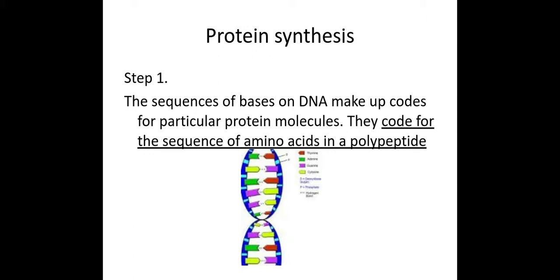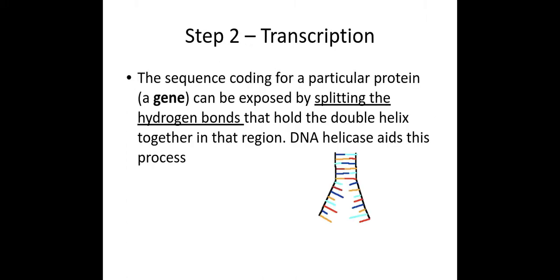So in order to access this gene to make a copy of it, the first thing that happens is the hydrogen bonds between the complementary base pairs on my DNA need to break. So here are my bases. And don't forget, between an A and a T, I'll have two hydrogen bonds. Between a G and a C, I'll have three hydrogen bonds. And the enzyme DNA helicase helps to break these hydrogen bonds.